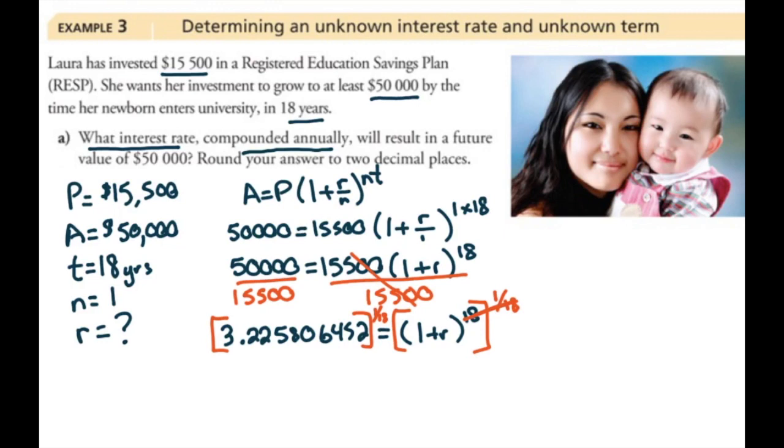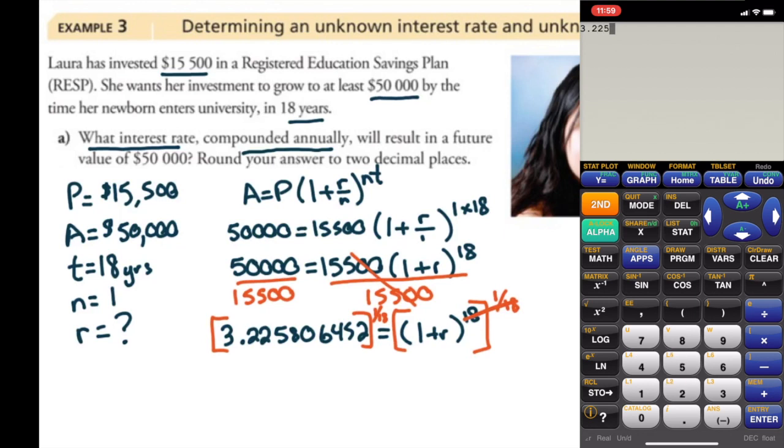And if you're using a graphing calculator, I'll show you a slight video as I go through this to how to do it. If you're not, make sure that you put brackets around 3.225806452 to the power of... We need brackets, 1 divided by 18. Calculate that out.